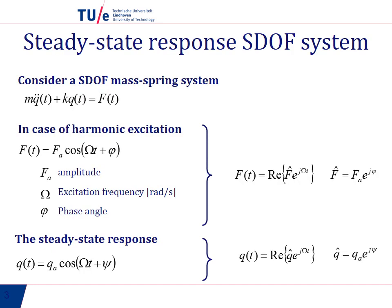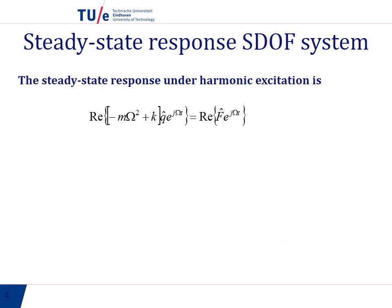So we go back to the single degree of freedom system and what we do is substitute the force and the response in the equations of motion. That is what you see here, and we take the real part. Then because this equation has to be valid for any time t, we can eliminate the e to the power of j omega t and we end up having this relationship: q hat is equal to f hat divided by minus m omega squared plus k.